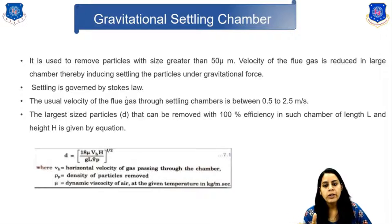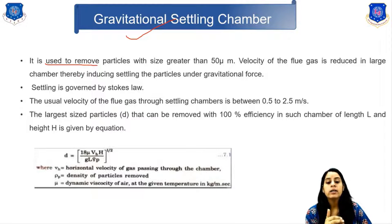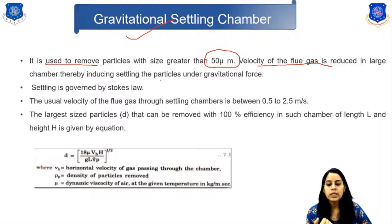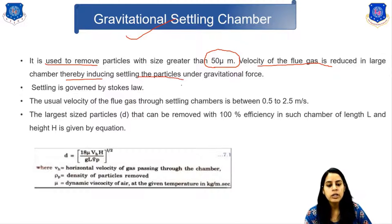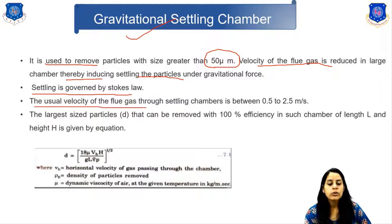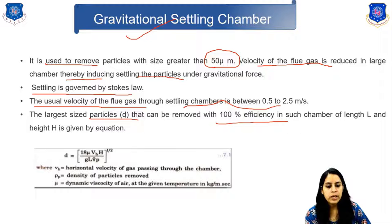The first device is the gravitational settling chamber. It is used to remove particles with a size greater than 15 micrometers. The velocity of the flue gas is reduced in a large chamber, causing the settling of particles under gravitational force. The useful velocity of the flue gas through the settling chamber is between 0.5 to 2.5 meters per second.